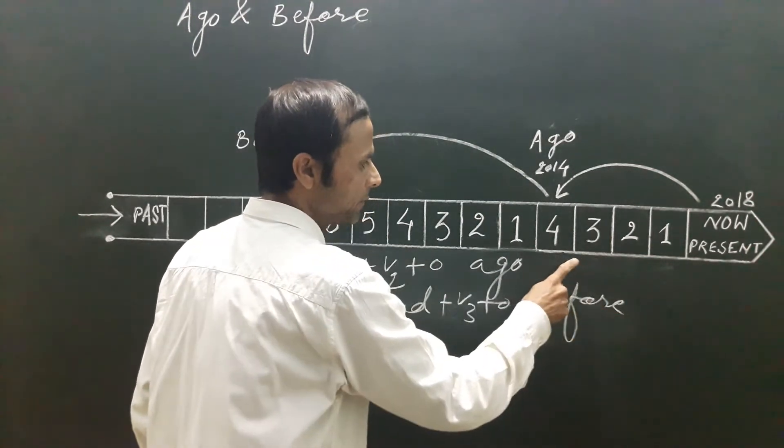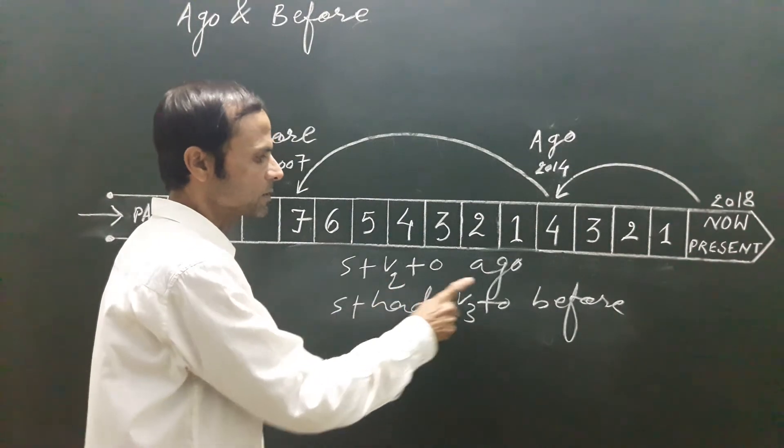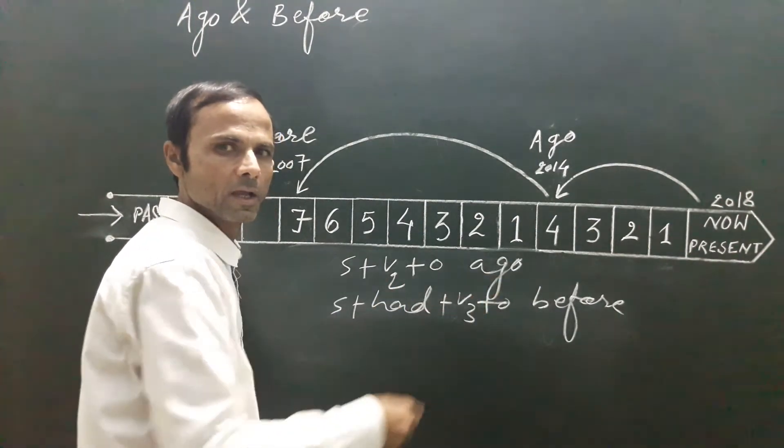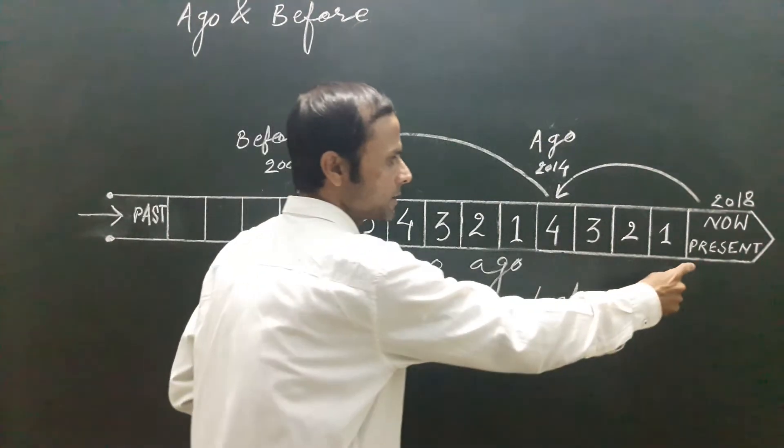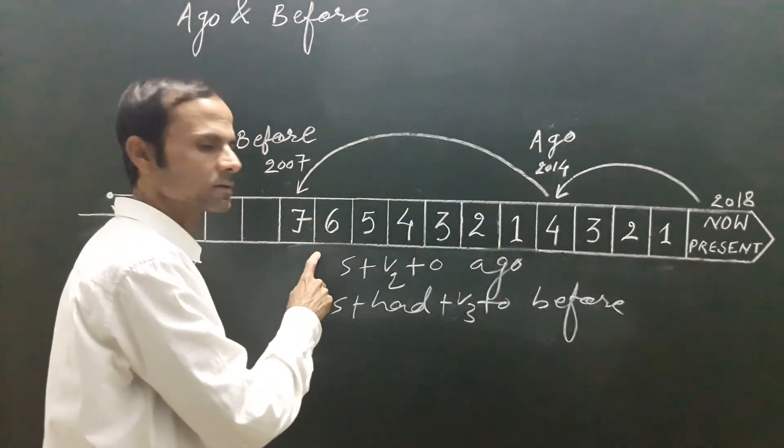I met one of my friends four years ago. Subject, past tense plus ago. We cannot use before here. Counting back from present to past, we use ago. Counting back from past to past, we use before.